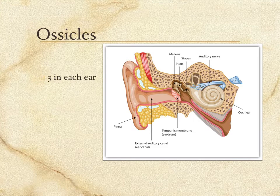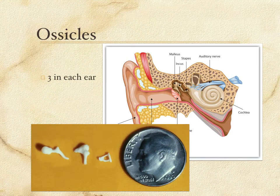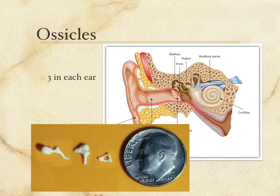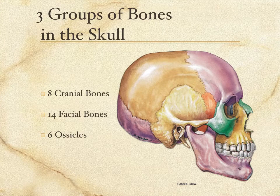How tiny are these bones? Here they are compared to the size of the smallest United States coin, the dime. These are full-fledged bones — cancellous bone, compact bone — all the nature of a bone and yet so tiny. So six of those. We have eight bones in the cranium, 14 bones in the face, and these six little ossicles for a total of 28 bones that make up the human skull.